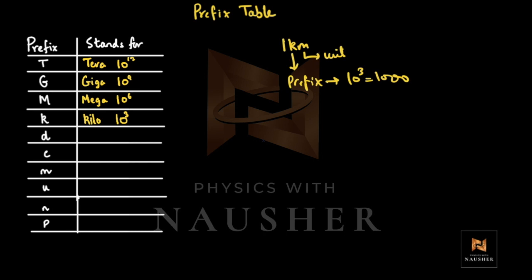You're surely aware of those words. Mega corresponds to million, so when they say millions of people flocked to the capital, that means 10⁶ people. If you had 2 million bugs in a computer, that means 2 × 10⁶ bugs.